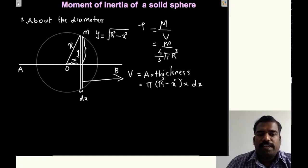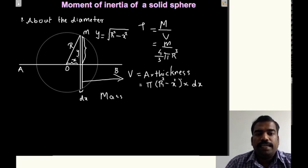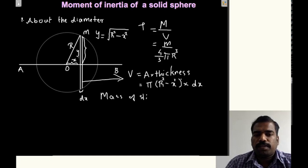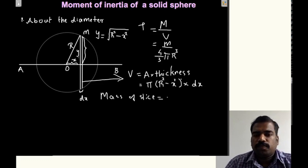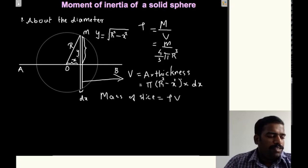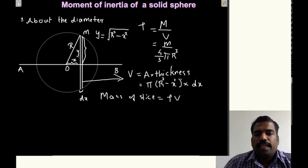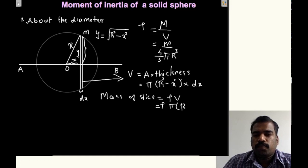Now we can find the mass of this particular slice. Mass of the slice equals mass per unit volume multiplied by volume of the slice, which is rho into the volume. So the mass of this slice is rho into π (R squared minus x squared) dx.